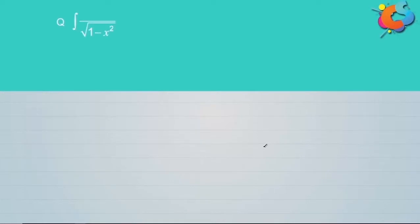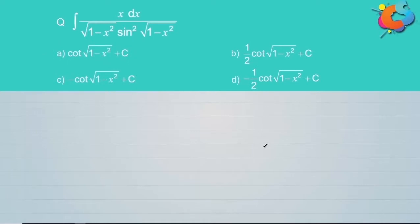Evaluate the integral of x dx divided by square root of (1 minus x squared) times sine squared of root of (1 minus x squared). Looking at the options, all have cot of root of (1 minus x squared), and we know integration of cosecant squared x gives cot x. So we need to express the integrand in terms of cosecant squared of root of (1 minus x squared), meaning we substitute root of (1 minus x squared) as t using the method of substitution.